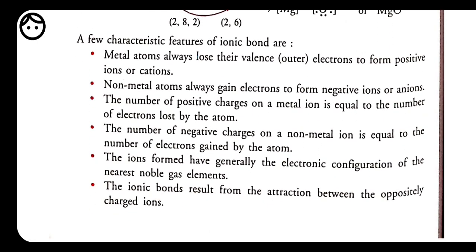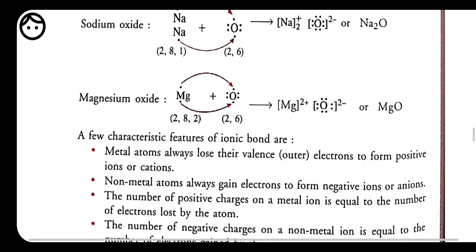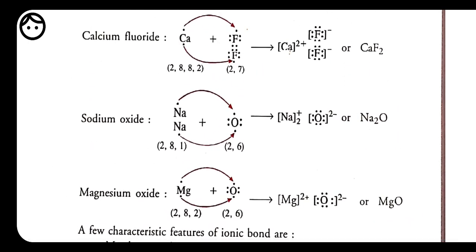Now some characteristics of ionic bonds. Metal atoms always lose their valence electrons to form positive ions (cations). Non-metals always gain electrons to form negative ions (anions). The number of positive charges on a metal ion equals the number of electrons lost. Sodium loses 1 electron → 1 positive charge. Calcium loses 2 electrons → 2 positive charges. Magnesium also loses 2 electrons → 2 positive charges. Aluminium has configuration 2, 8, 3, so it loses 3 electrons → 3 positive charges.